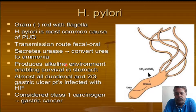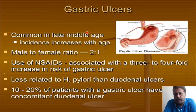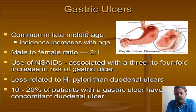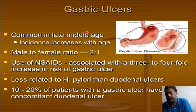As for etiology, almost 70 to 80 percent of the duodenal ulcers are caused by H. pylori compared to gastric ulcers, and it is a Class 1 carcinogenic indication for gastric cancer and MALT-associated malignancies. Gastric ulcers are very common in middle age and the incidence increases with age. Males are affected twice compared to females. NSAIDs use is associated with three to four times increase in the risk of gastric ulcer, depending on duration of use and whether gastric protective drugs are co-prescribed.